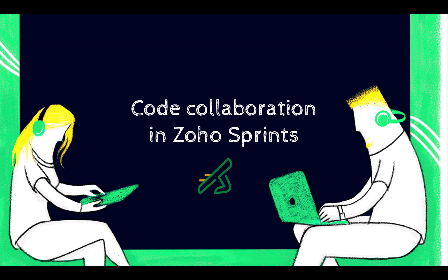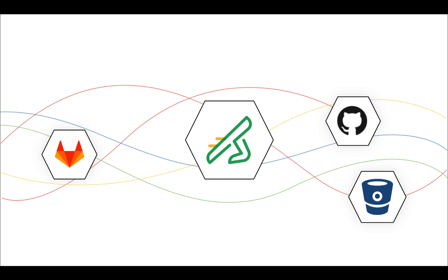Hello everyone, my name is Pratik and I work with the Zoho Sprints team. In today's webinar, I'm going to be talking about how development teams can collaborate their code changes and keep their repositories in sync with Zoho Sprints. I'm delighted to announce that Zoho Sprints now integrates with all the popular version control and source code management tools like GitHub, GitLab and Bitbucket.